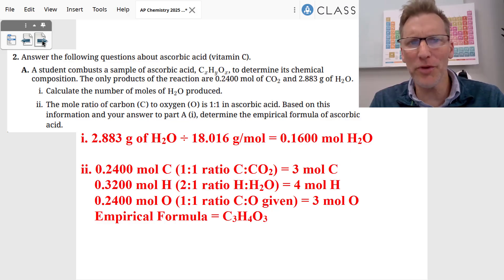Number two starts off with a question about ascorbic acid. You can see they gave us a number of moles of carbon dioxide and a number of grams of water. The first thing they want us to do is find the moles of water. We take the grams, 2.883 grams of water, and divide by 18.016 grams per mole, and we get 0.1600 moles of water.